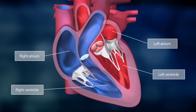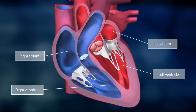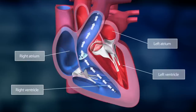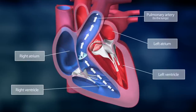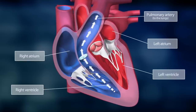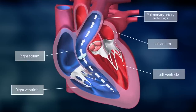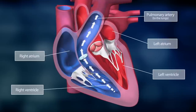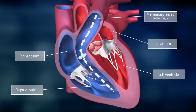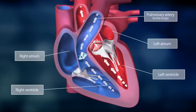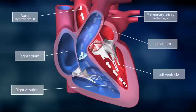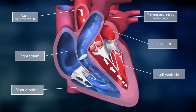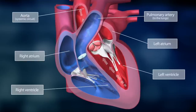The right and left side of the heart work hand in hand. The right side pumps blood through the pulmonary artery into the lung, where it is enriched with oxygen. The left side pumps blood to all other parts of the body through the aorta and the systemic circuit.